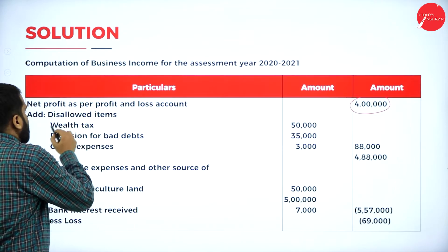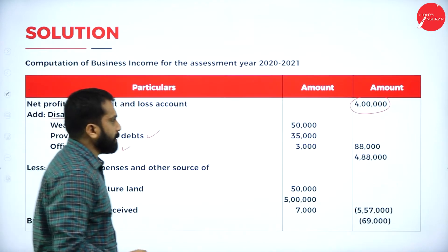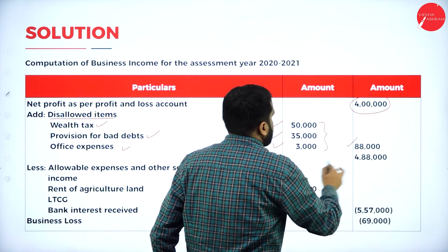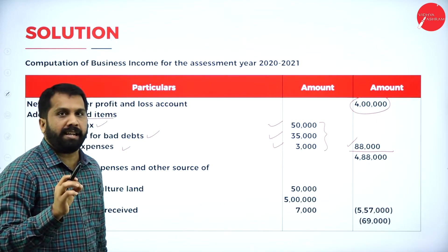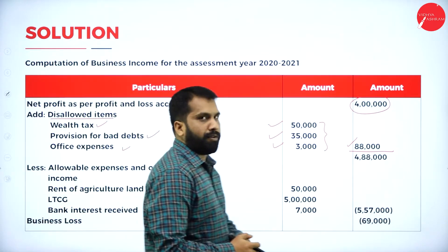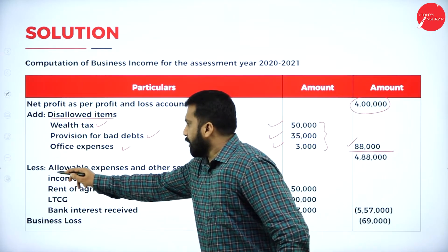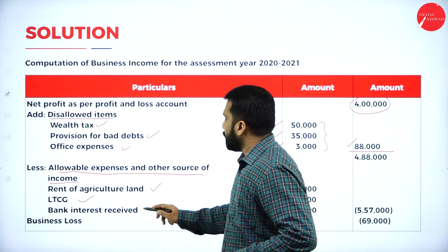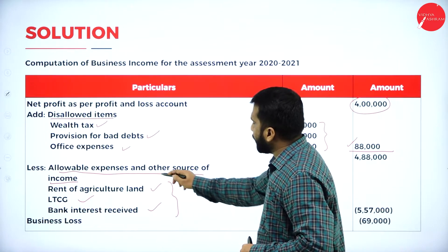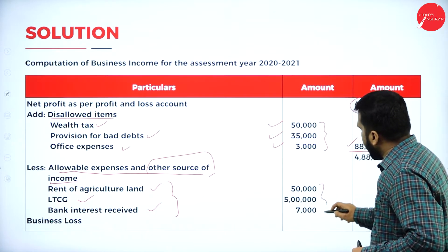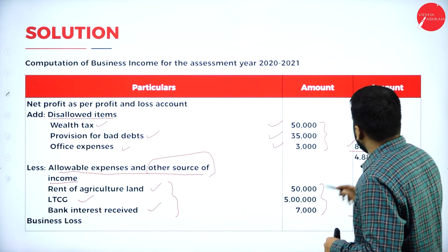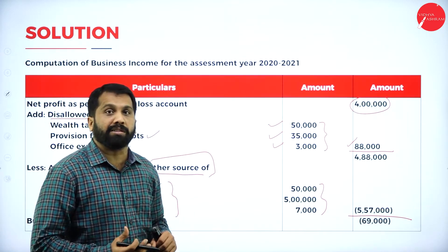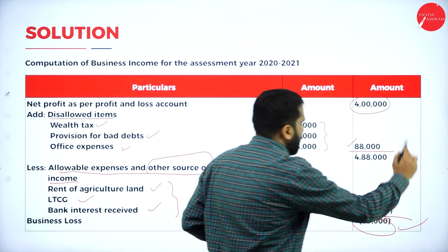After that, once you are done with 4 lakh 88,000, you go with allowable expenses and other source of income. Rent of agriculture land, LTCG, and bank interest received are all other source income. Total of these is 5 lakh 57,000. So 4 lakh 88,000 minus 5 lakh 57,000 gives a business loss of 69,000.